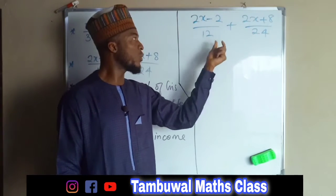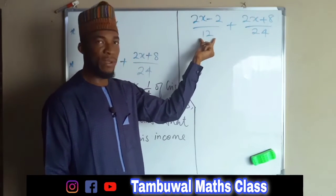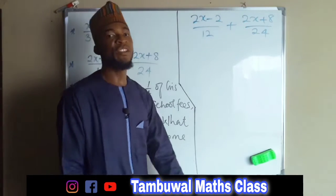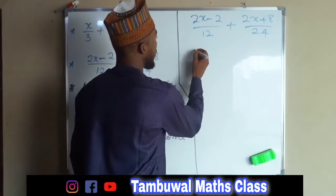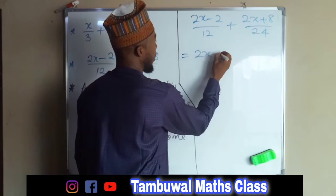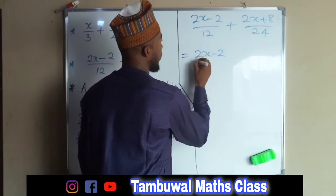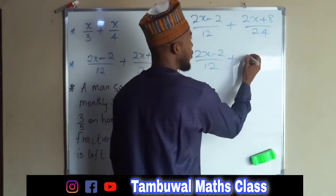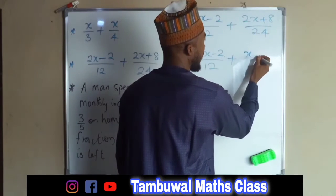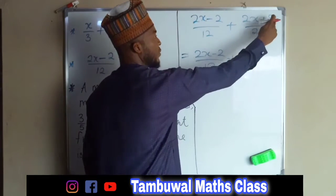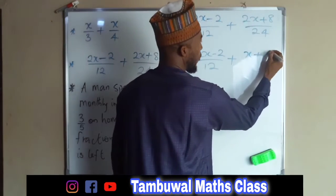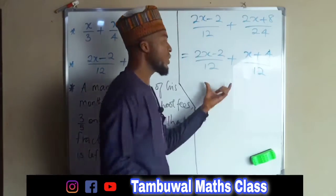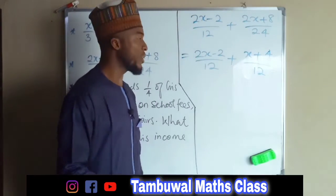If we divide 24 by 2 we obtain 12, so we divide both numerator and denominator of the first fraction by 2, giving us (2x minus 2) over 12. For the second fraction, the numerator stays as is — x plus this divided by 2 is 4 — and 24 divided by 2 is 12. So now we have common denominators.